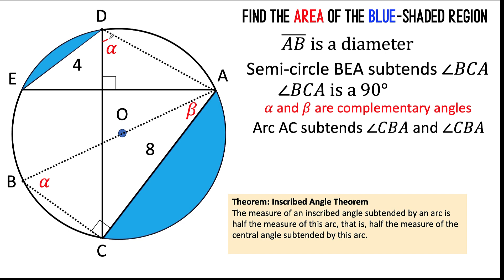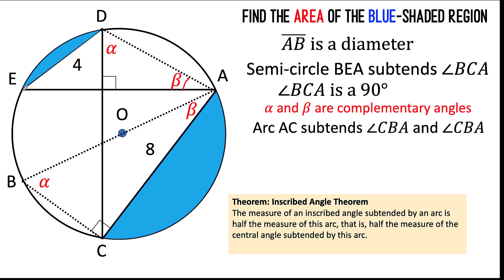We now have alpha and a right angle in triangle CDA. That means the remaining angle plus alpha must be complementary, because the sum of interior angles of a triangle is 180 degrees and we already have a 90-degree angle. Since alpha and beta are complementary, the remaining angle here must be beta. So we label it as beta. We have beta intercepting arc ED here, and also beta intercepting arc BC here.